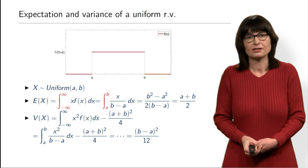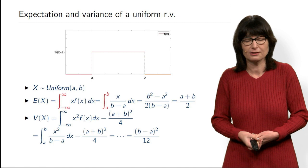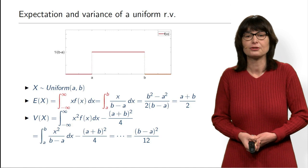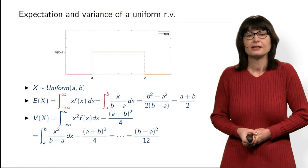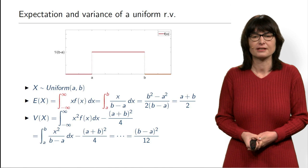To summarize this micro lecture: we looked at continuous distributions and saw that they are defined by a probability density function. Different densities model different real-life situations. We learned how to compute the cumulative distribution function, the probability of an interval, and expectation and variance — where the computations differ from the discrete case only in using integrals instead of sums, while the interpretation remains exactly the same.